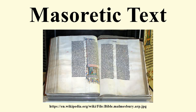The Masoretic text is the authoritative Hebrew and Aramaic text of the Tanakh for Rabbinic Judaism. However, contemporary scholars seeking to understand the history of the Hebrew Bible's texts use a range of other sources. These include Greek and Syriac translations, quotations from Rabbinic manuscripts, the Samaritan Pentateuch, and others such as the Dead Sea Scrolls. Many of these are older than the Masoretic text and often contradict it.